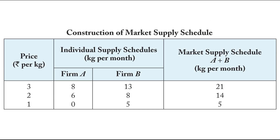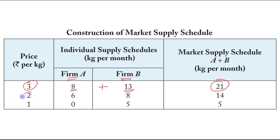We have already covered this topic in our last video. We went through the market supply schedule in which there are two firms, Firm A and Firm B. At a price of three, Firm A is producing 8 kg per month and Firm B is producing 13 kg per month, so the total market supply is 21 kg per month. The same applies at prices of rupees 2 and rupees 1.